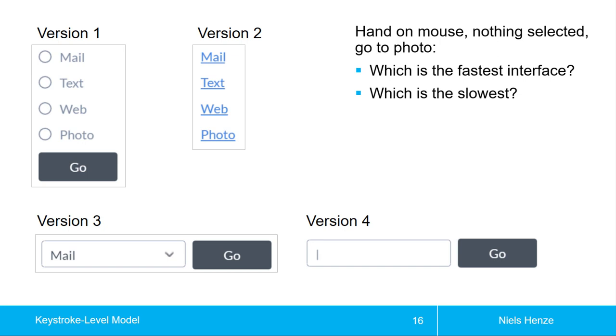The other question is, which is the slowest? This might be more surprising. The slowest is actually version 3, and you might think, but in version 4 I have to type all these characters. Why is version 3 even slower? KLM can provide us an answer to that.